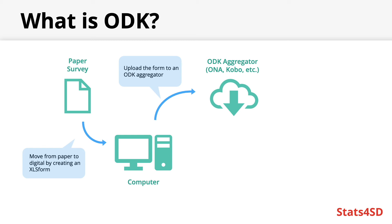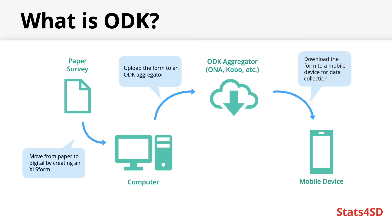From the ODK aggregator you'll be able to configure many settings about your project and form, including who can submit, how they can submit, and attach any collaborators or media files to your project. This server will be where your forms and data are housed, from which other components will be able to download them and where any uploads will be sent to. Your mobile device will then be able to download your form from the aggregator and use it to collect data, once you have an appropriate app installed. You can download the form with an internet connection and then collect data in the field even without internet at the data collection site, as the form is stored locally on your device.